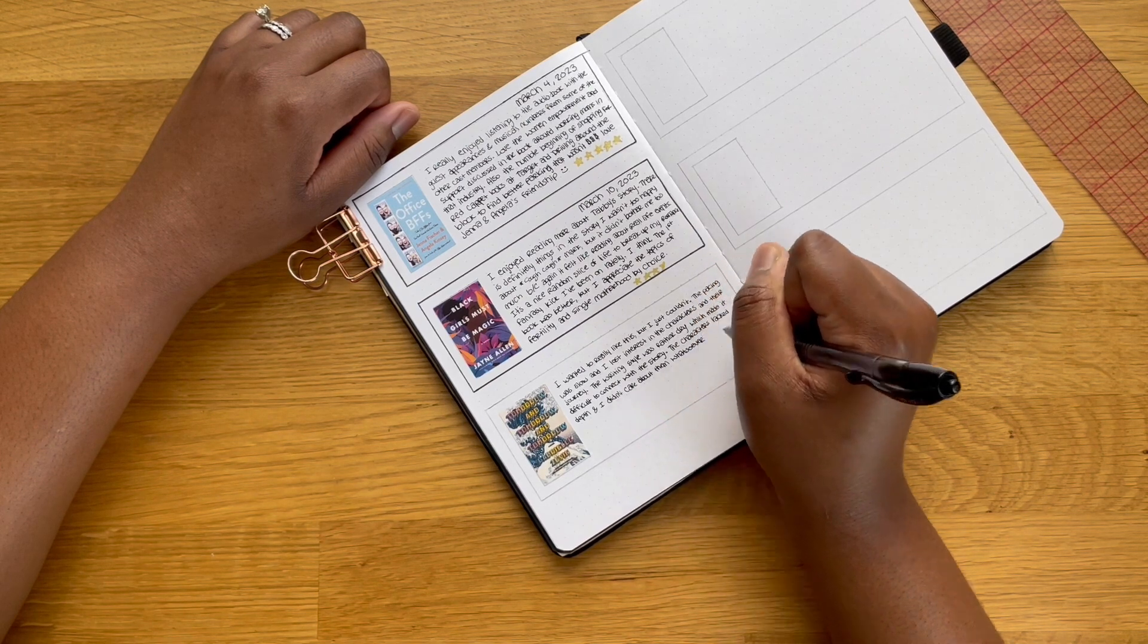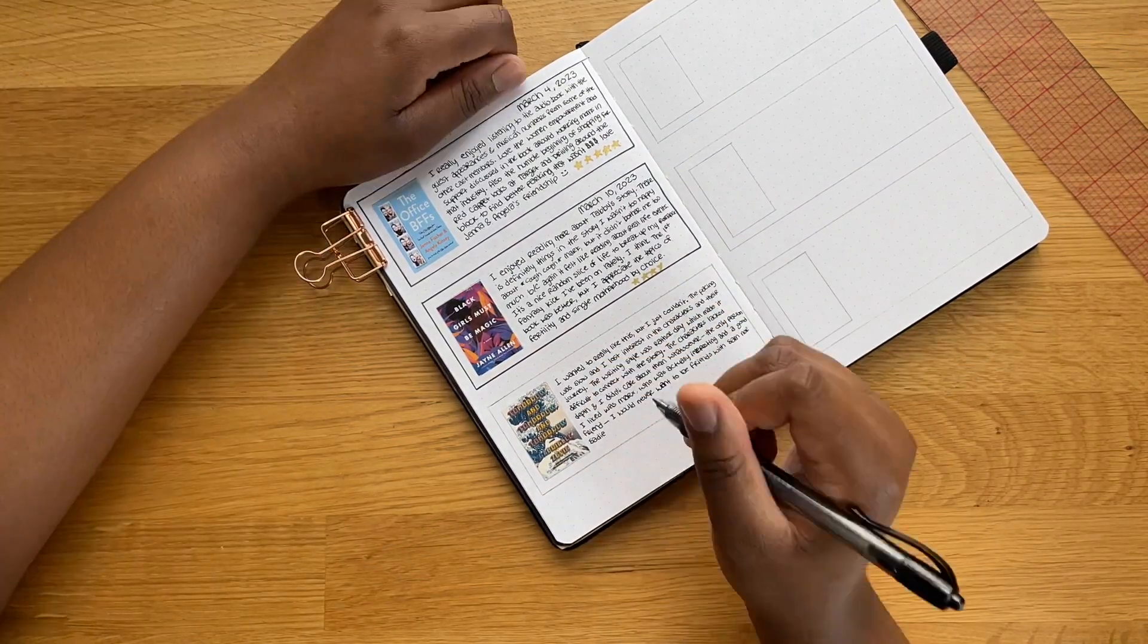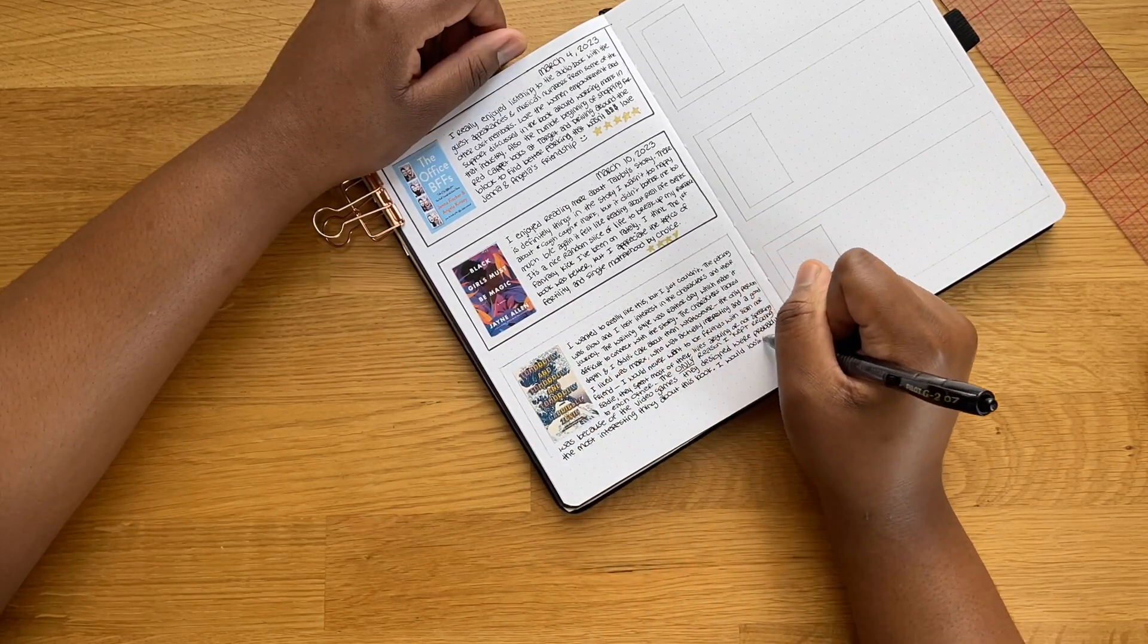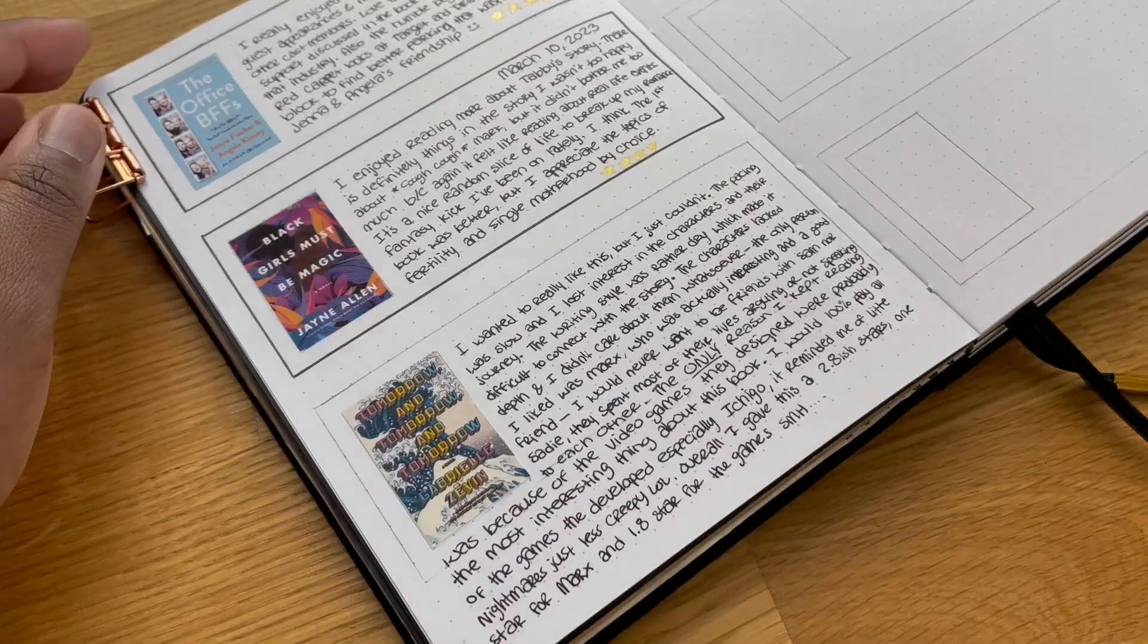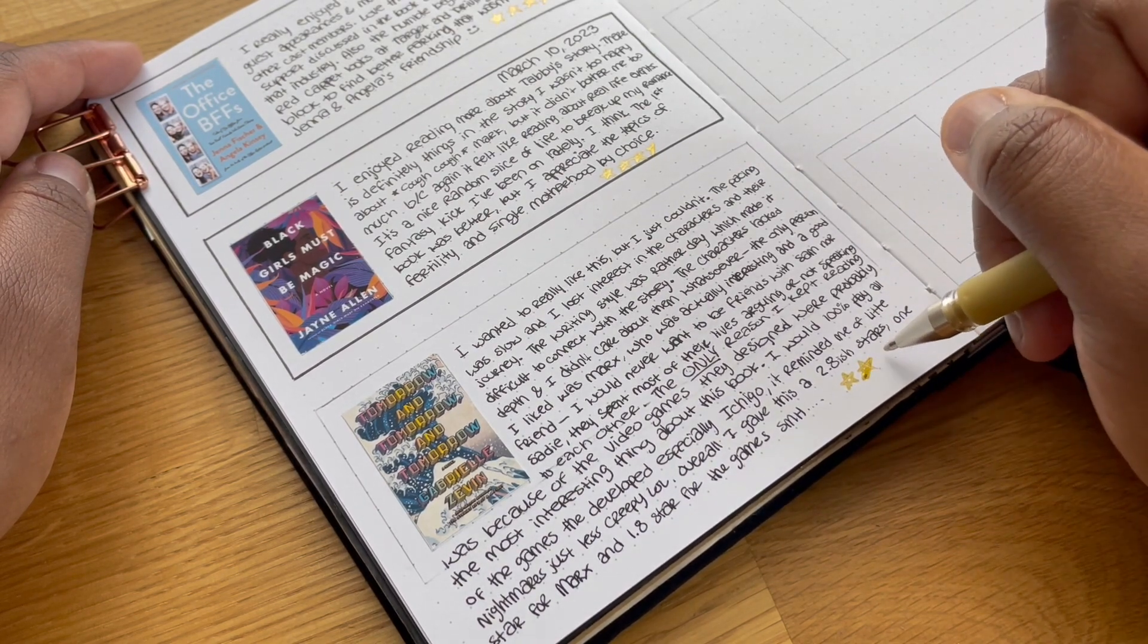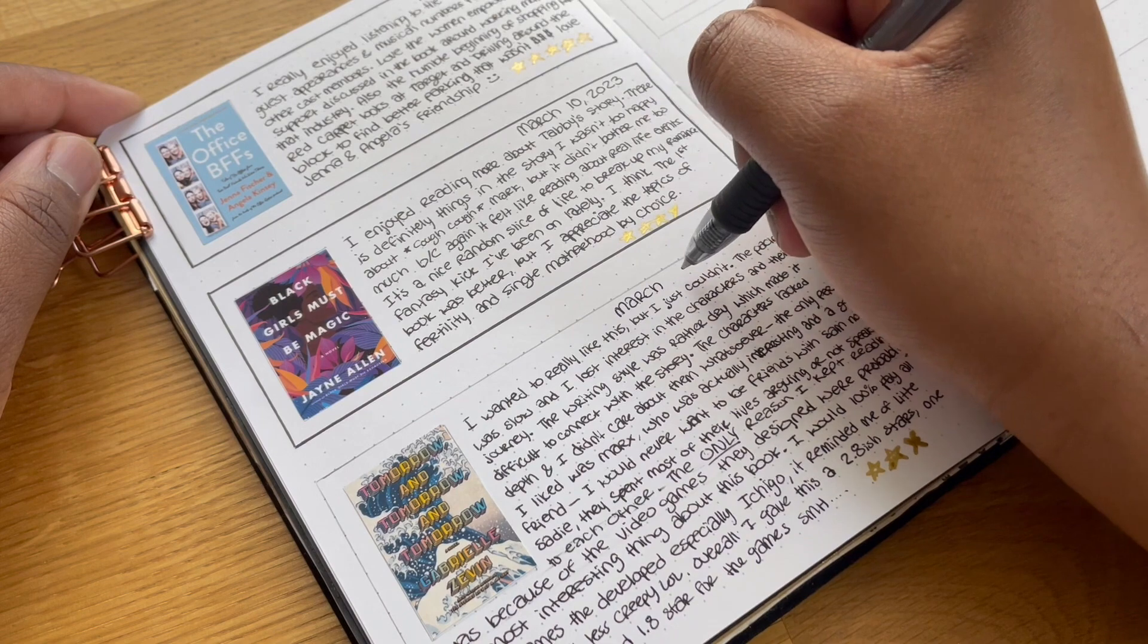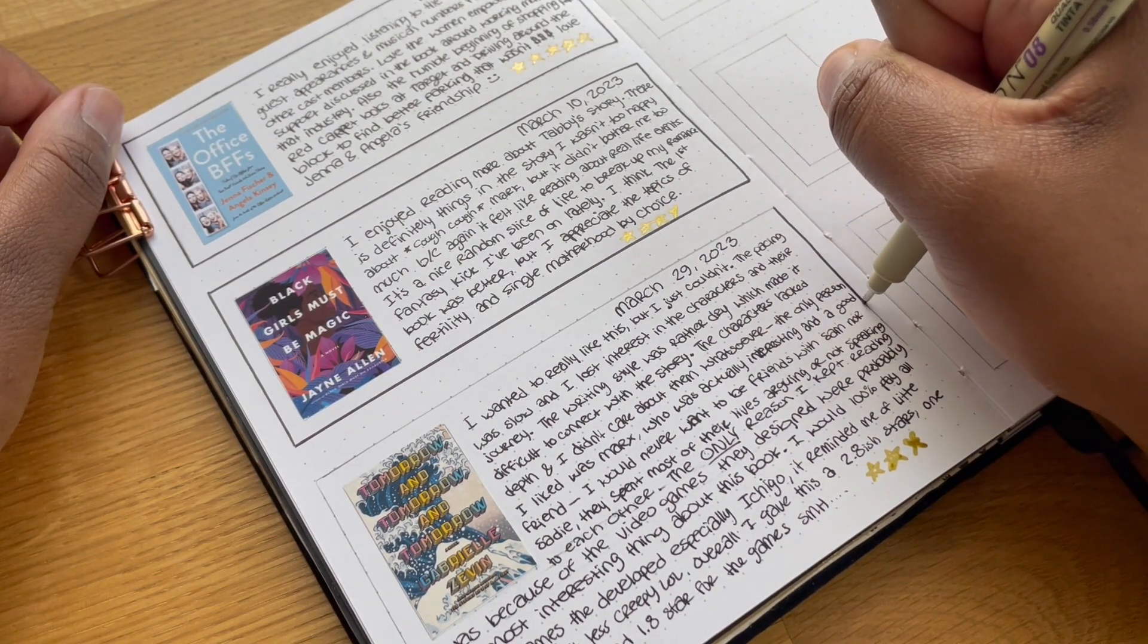The characters themselves I thought lacked depth, and I found myself not caring about them whatsoever. The only person I liked was Marx - he was actually interesting and a really good friend. I think this book was supposed to be about friendship, but the relationship between Sadie and Sam was odd, and they spent majority of their lives arguing or not speaking to one another. Like, I would never want to be friends with either of these people. The only, and I cannot stress this enough, the only reason I kept reading was because the video games they designed sound really really cool and, again, were probably the only interesting thing in this book other than Marx. I would 100% play all of the games they developed, and I really wish they were actually real games, especially their first game Ichigo. It reminded me a little bit of Little Nightmares, just less creepy.